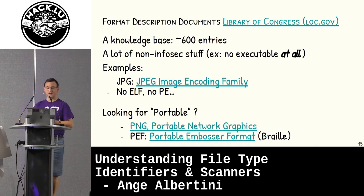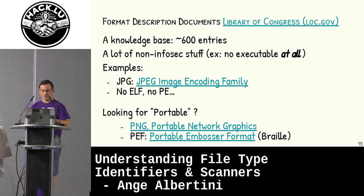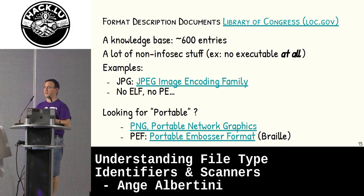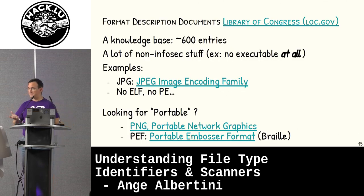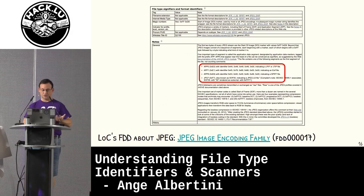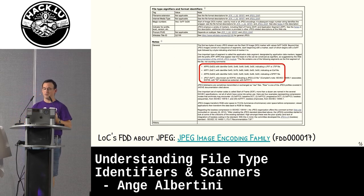The Library of Congress FDD — Format Description Document — is a knowledge base of roughly 600 entries. No executables at all. It's really for digital preservation, library, not InfoSec stuff. There is nothing about executables — no PE or ELF or whatever. But on the other hand, they care about portable embosser formats. It's just a different view — it's about the different views of the file format landscape from a software perspective. For example, the FDD from the Library of Congress about JPEG just describes some identifiers — very simple for that part.